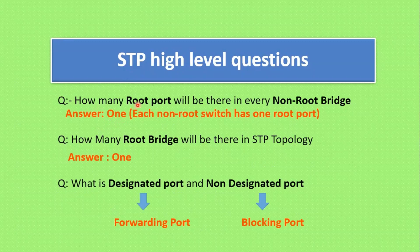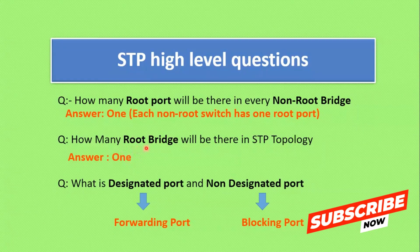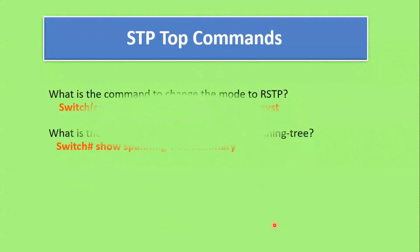How many root ports will there be on one non-root bridge? The answer is one — only one root port exists per non-root bridge. How many root bridges will there be in one STP topology? Again, the answer is one — only one root bridge exists per STP topology. What is a designated port versus a non-designated port? A designated port is generally called a forwarding port; a non-designated port is a blocking port.